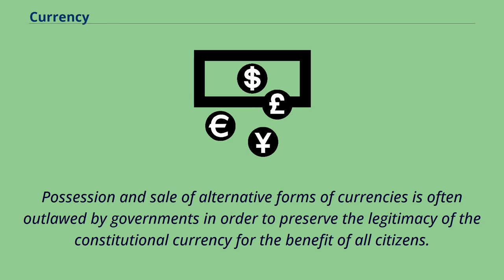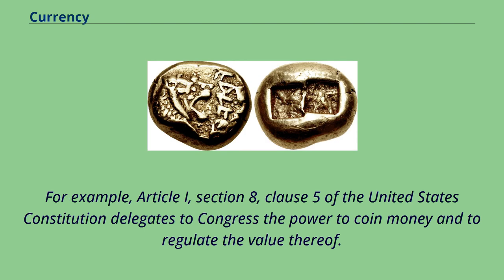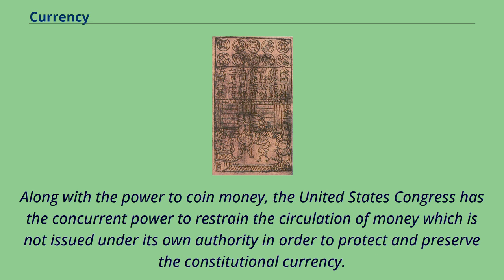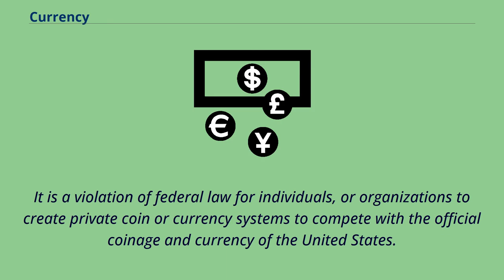For example, Article I, Section 8, Clause 5 of the United States Constitution delegates to Congress the power to coin money and to regulate the value thereof. This power was delegated to Congress in order to establish and preserve a uniform standard of value and to ensure a singular monetary system for all purchases and debts in the United States, public and private. Along with the power to coin money, the United States Congress has the concurrent power to restrain the circulation of money not issued under its own authority. It is a violation of federal law for individuals or organizations to create private coin or currency systems to compete with the official coinage and currency of the United States.